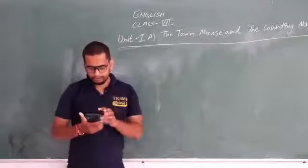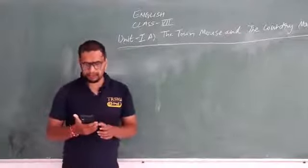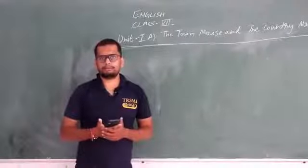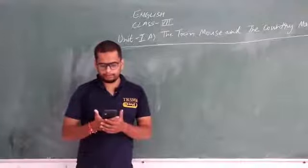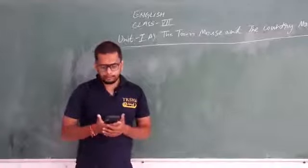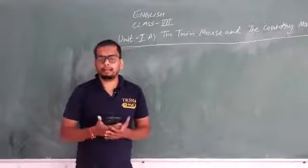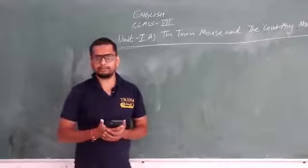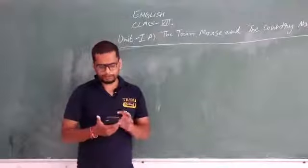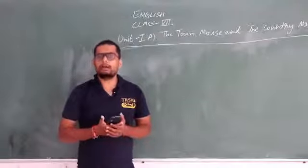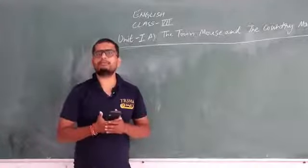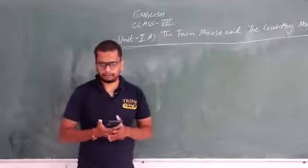Now look at the picture on the right side. Here we have big buildings, high skyscrapers, and a lot of traffic on the road - many vehicles moving, some public vehicles and some transport vehicles like lorries carrying luggage. So what is being shown on the right side? Yes, this is the picture of a town or a city.